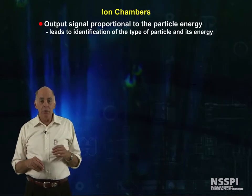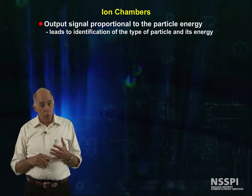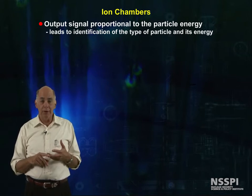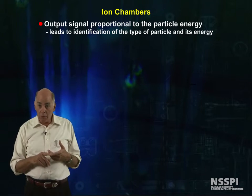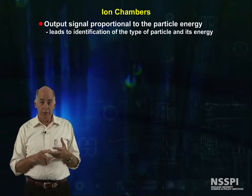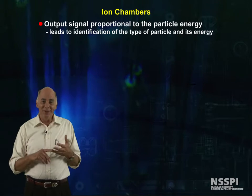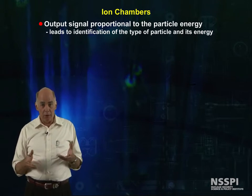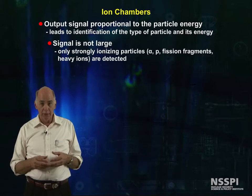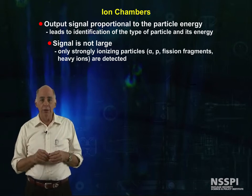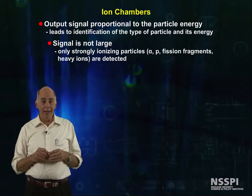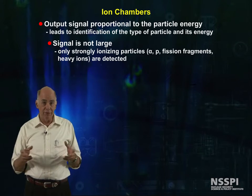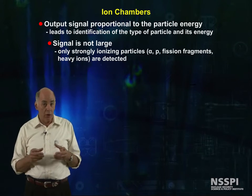In the ion chamber region, the output signal is proportional to the amount of charge deposited in the sensitive volume, which is in turn proportional to the incident particle energy. In principle, this could be used to identify the type of particle and its energy. But the signal is not large, and only strongly ionizing particles — for example, alpha, proton, fission fragments, or heavy ions — are detected.